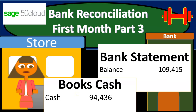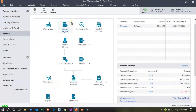In this presentation, we will continue with the bank reconciliation for the first month of operations, this time looking at the actual bank reconciliation report. Let's get started with Sage 50 Cloud Accounting. Here we are in our Get Great Guitars file. Last time we entered the bank reconciliation; this time we're going to consider the reports for it.